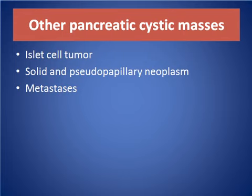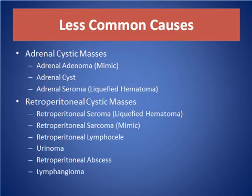Other pancreatic cystic mass lesions include islet cell tumor, solid and pseudopapillary neoplasm, and metastasis. Common causes also include adrenal cystic masses like adrenal adenoma, which is a mimic of a cystic mass lesion in the retroperitoneum. Retroperitoneal seroma, liquefied hematoma, and retroperitoneal sarcoma can also mimic the cystic mass lesion in the retroperitoneal region.